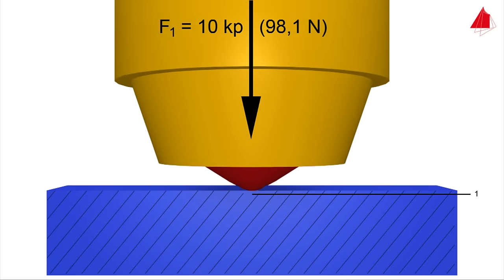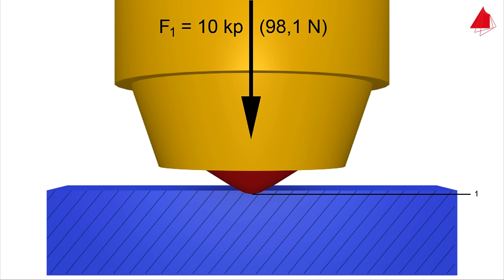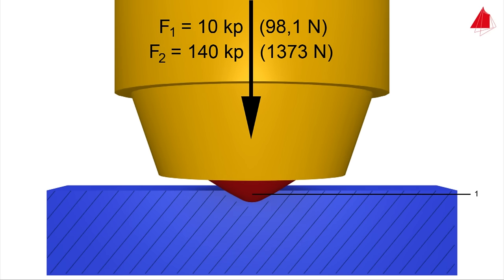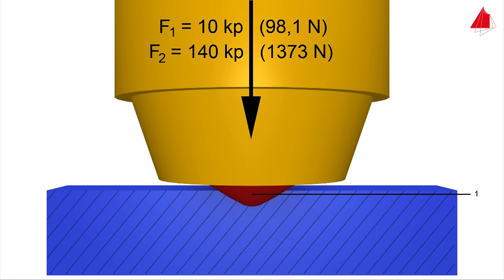In step 2, the test force is increased by 140 kiloponds which is acting as the major force. This means that an overall force of 150 kiloponds is now acting on the indenter and this force is held for a certain time.